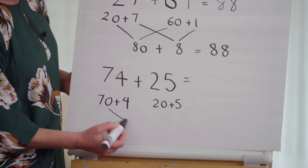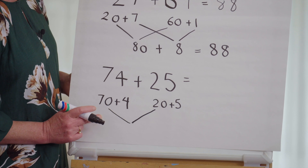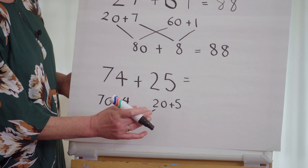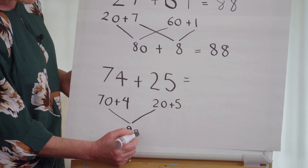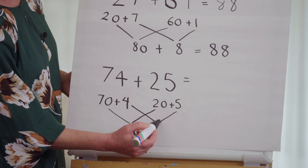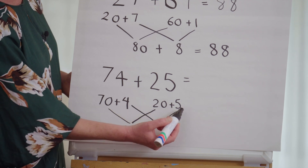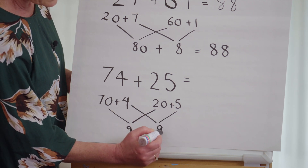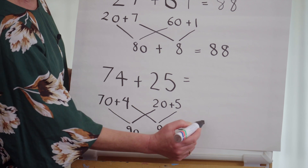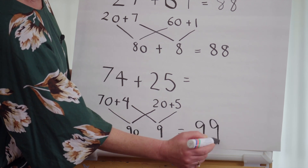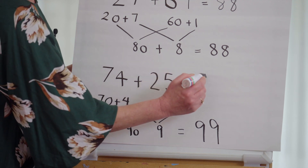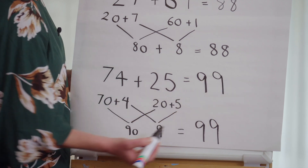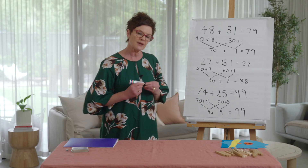The next step is to pop my tens together: 70 and 20 make 90. And let's pop my ones together: 4 and 5 — oh, that's a near double — 4 and 5 is 9. And I have this fabulous answer of 99. So 74 and 25 make 99. That is a really effective way of putting two two-digit numbers together in an addition sentence.